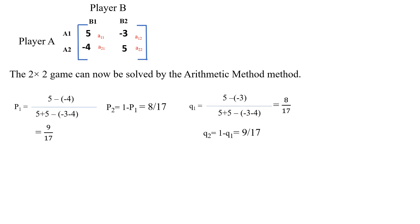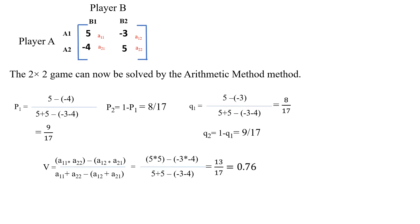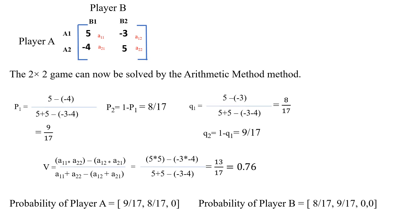Similarly, substituting all values A11, A22, A12, and A21 in the formula for the value of the game, we get V = 0.76.